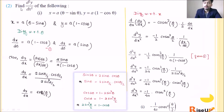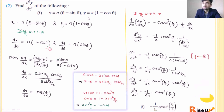Let us look at the first question of question number 2: find d²y/dx² of the following — x equals a(θ − sinθ), y equals a(1 − cosθ). You have to find the second order derivative. This is a parametric equation because there are two equations. You have already read how to differentiate parametric equations in the 4th exercise.